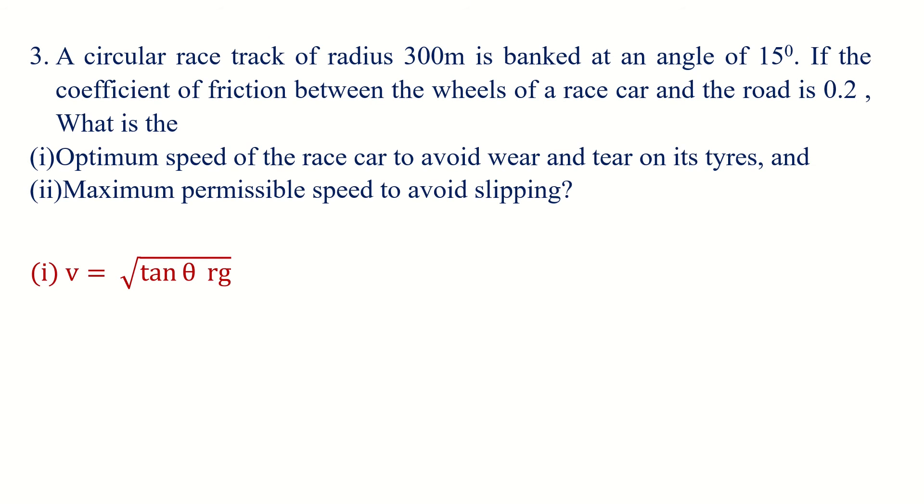G is 9.8, substituting here: tan 15 degrees times 300 times 9.8 becomes 0.268. Then V equals 28.1 meters per second.